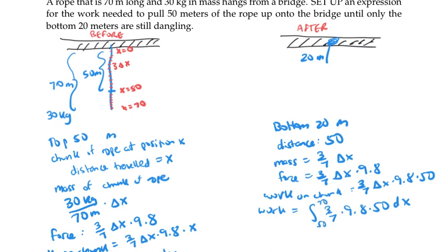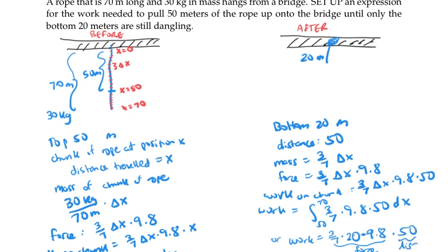We could have calculated the work done on this part of the rope without an integral, because this part of the rope is just going straight up — we can think of it as a constant force times a constant distance of 50 meters. The force is going to be the density times the length of rope, which is 20 meters, times 9.8, and the distance is 50 meters. Our final answer is the sum of these two expressions: the integral from 0 to 50 of (3/7) times 9.8 times x dx, plus (3/7) times 20 times 9.8 times 50.